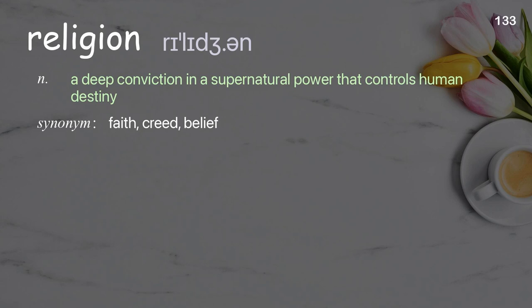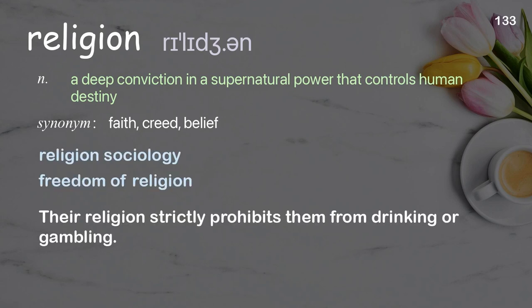Religion: a deep conviction in a supernatural power that controls human destiny. Examples: sociology, freedom of religion. Their religion strictly prohibits them from drinking or gambling.